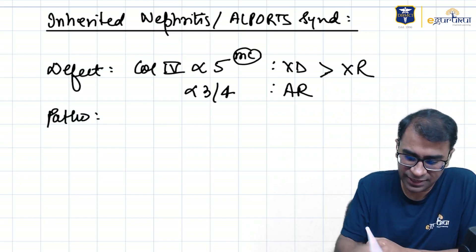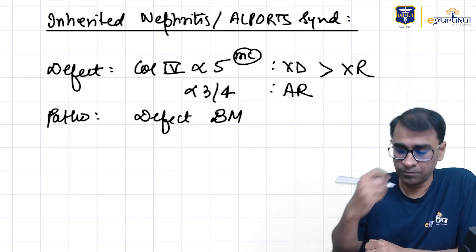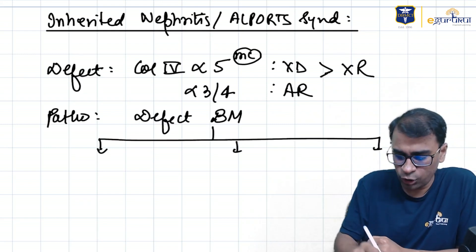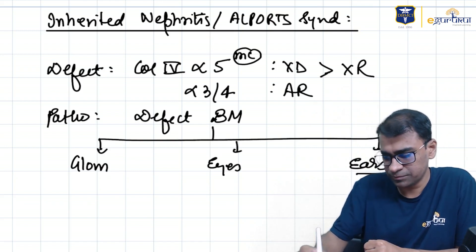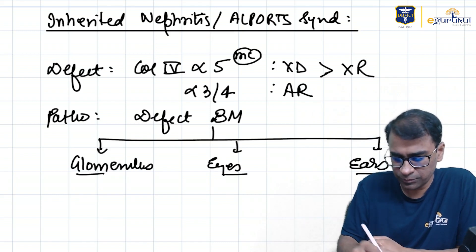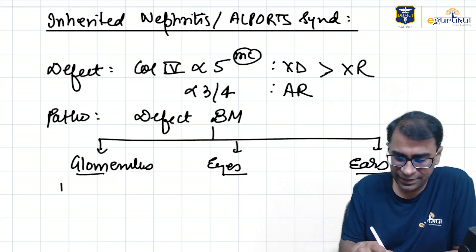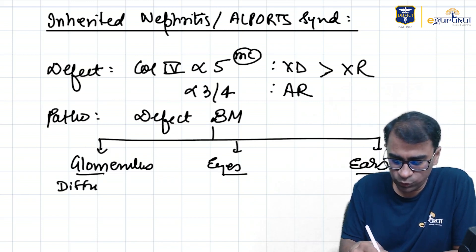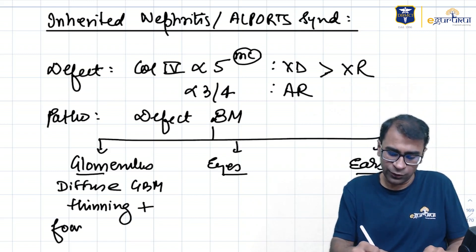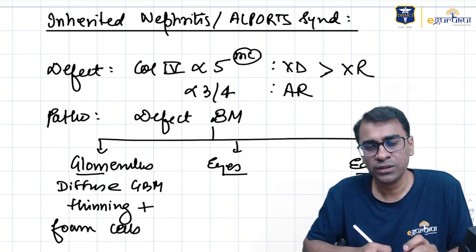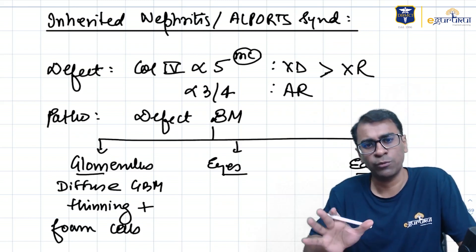The basic pathology is that defective collagen makes a defective basement membrane. This defective basement membrane can occur in three areas: the glomerulus, the eyes, and the ears. In the glomerulus, it leads to diffuse GBM thinning, and along with that it often shows foam cells in the interstitium. Why foam cells occur is not very clear, but it is a very frequently asked question.